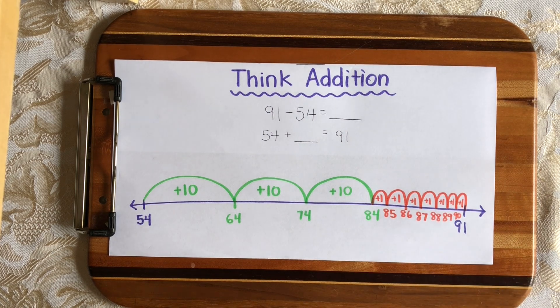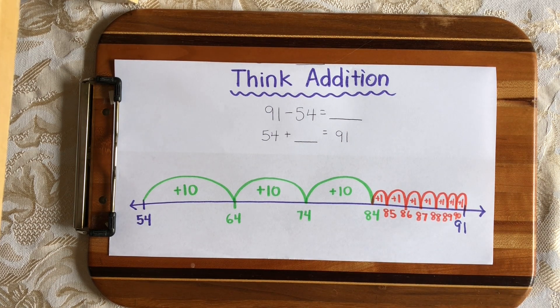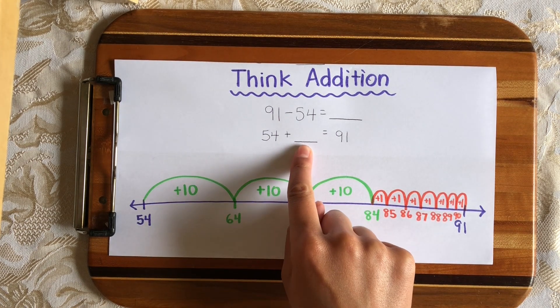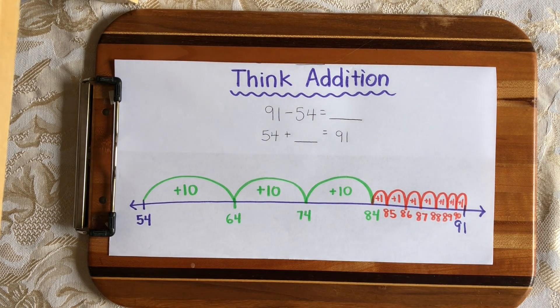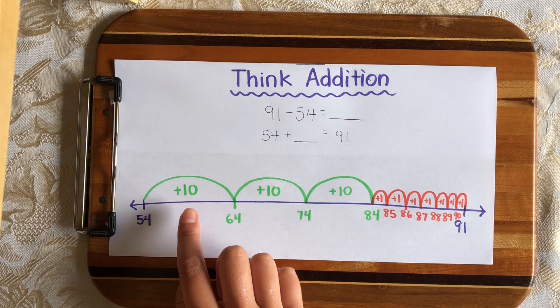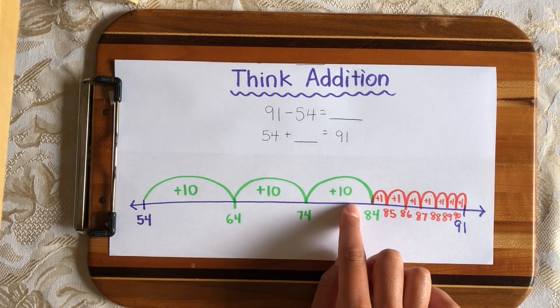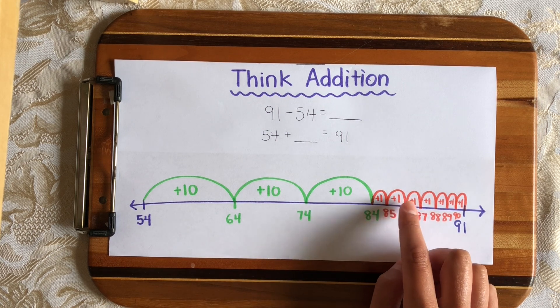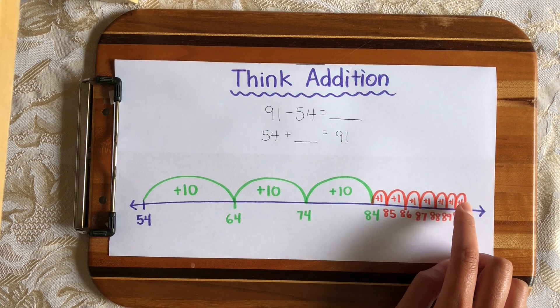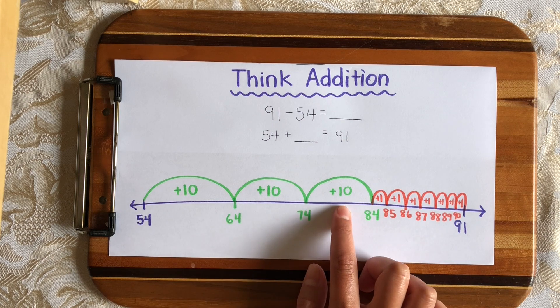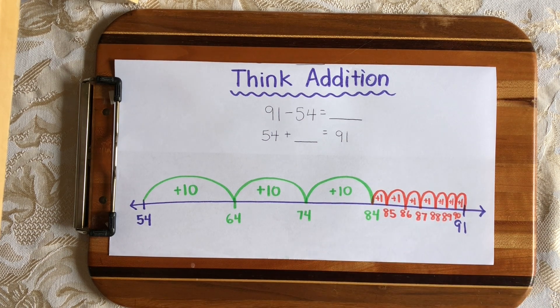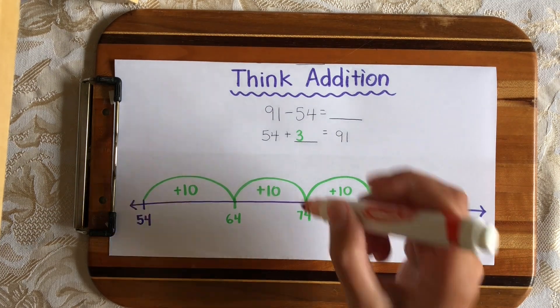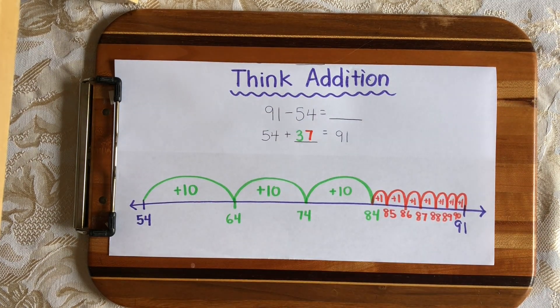So I just figured out how many hops of 10s and 1s I need to make to get from 54 to 91. So I can fill in this blank right here. So let's count all together what we got. We got 3 tens, 10, 20, 30. And let's see how many hops of 1 we had to make. 1, 2, 3, 4, 5, 6, 7. So 3 tens and 7 ones. That means that 54 plus 37 will get us to 91.